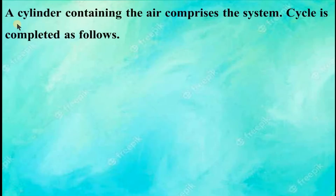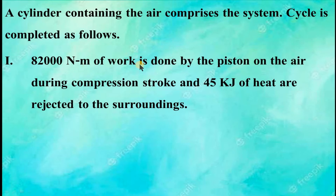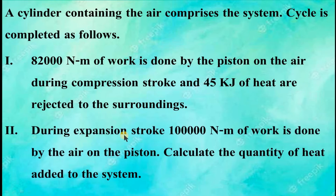First, I will read the question. A cylinder containing the air comprises the system. Cycle is completed as follows. 82,000 Nm of work is done by the piston on the air during compression stroke and 45 kJ of heat are rejected to the surroundings. During expansion stroke, 1 lakh Nm of work is done by the air on the piston. Calculate the quantity of heat added to the system.